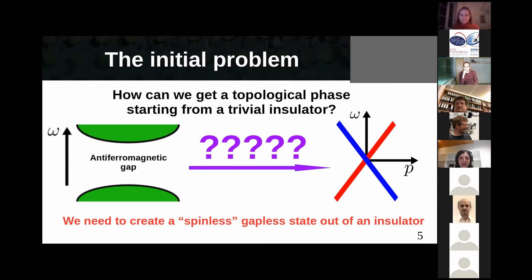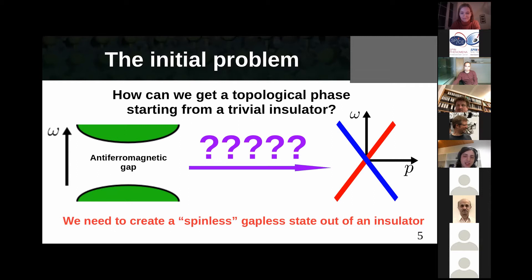We need to create helical states from an antiferromagnetic insulator. But by definition of an antiferromagnetic insulator, we do not have helical states — the system is gapped, with a finite energy cost to create an excitation, so there is no helical state whatsoever. This seems like a really deep problem: we want helical states, but the material we are using is gapped everywhere and topologically trivial. So the question is how are we going to solve this critical problem.